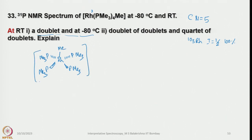If we look into the square pyramidal structure, all 4 phosphines are in the basal plane and they are identical. They couple with rhodium to show a doublet. This is the room temperature structure.